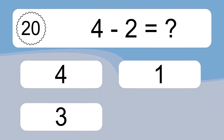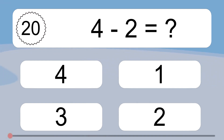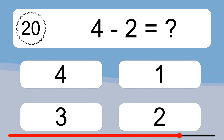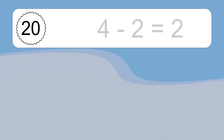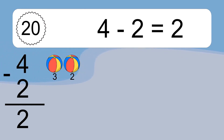4 minus 2 equals what? 4 minus 2 equals 2. Let's count it. 3, 2.